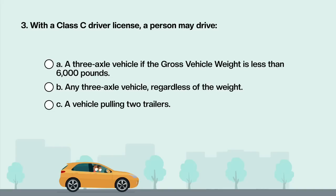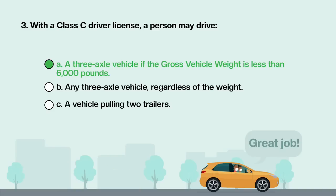With a Class C driver license, a person may drive: A. A three-axle vehicle if the gross vehicle weight is less than 6,000 pounds. B. Any three-axle vehicle regardless of the weight. C. A vehicle pulling two trailers. Answer is A: A three-axle vehicle if the gross vehicle weight is less than 6,000 pounds.